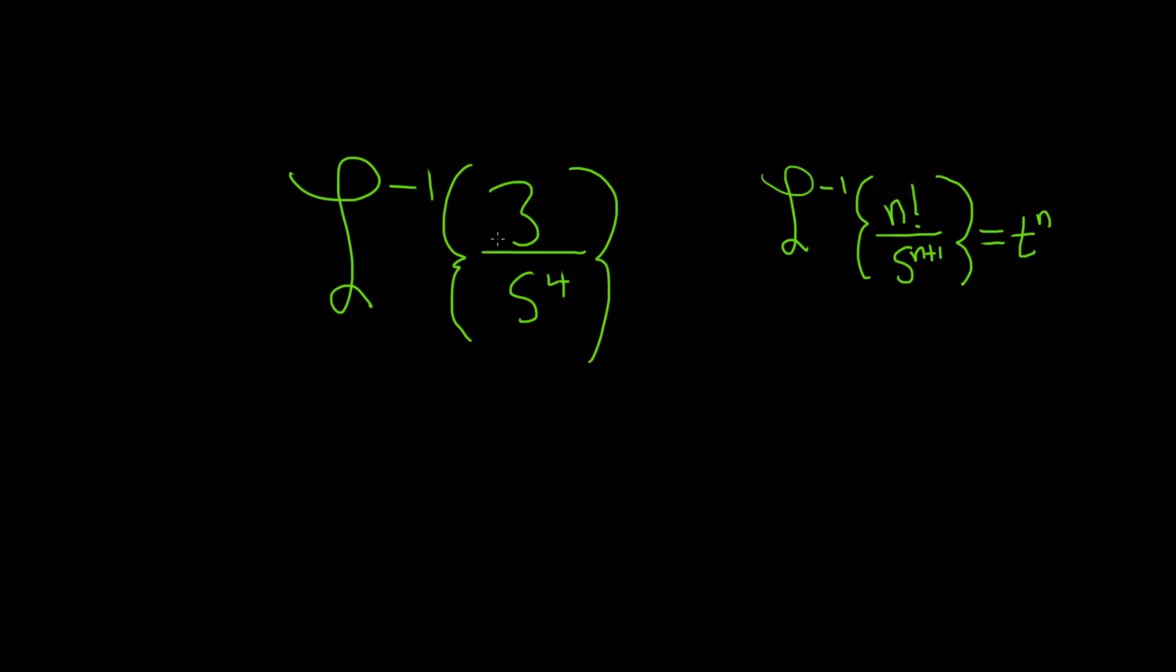So in this problem here, we have a 3 and we have a 4 on the bottom. So because we have a 4 here, we really need a 3 factorial here.